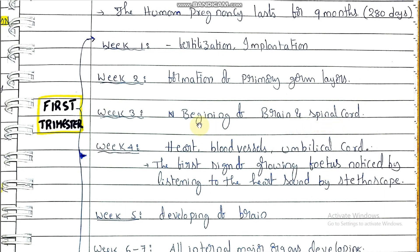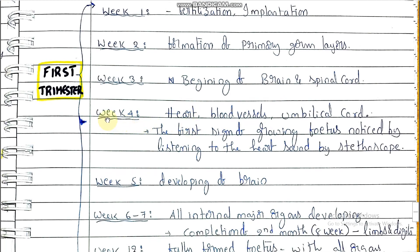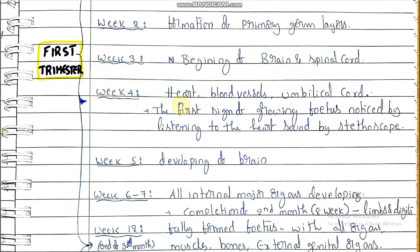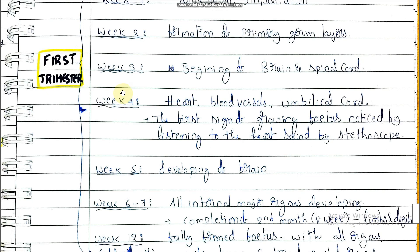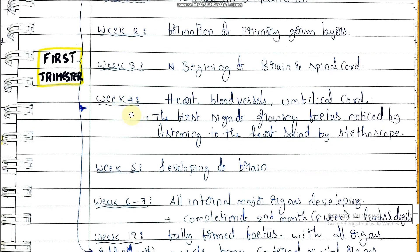In the third week, the beginning of brain and spinal cord formation takes place along with neural cord development. In the fourth week, the heart, blood vessels, and umbilical cord are formed — first the umbilical cord, then the placenta. After completion of 30 days, the first sign of a growing fetus is noticed by listening to the heartbeat with a stethoscope.